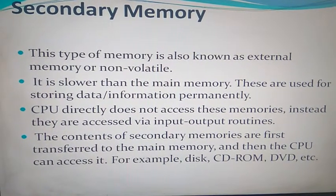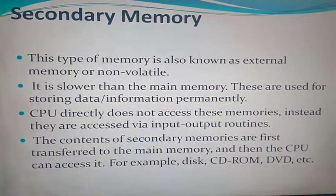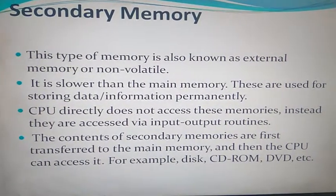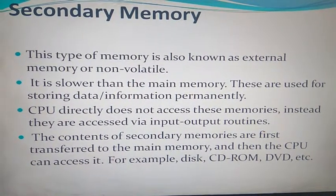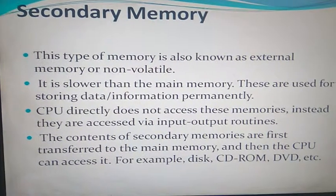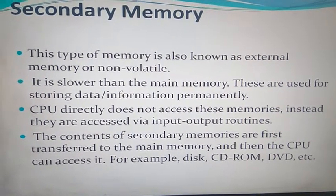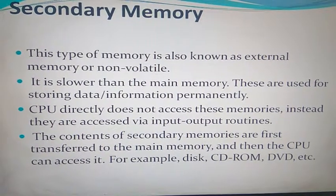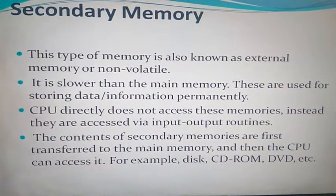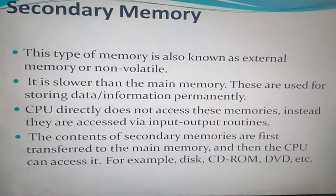Secondary memory is also called non-volatile memory — meaning once data is stored, it will never get erased. It is slower than main memory. These are used for storing data and information permanently. The CPU does not directly access secondary memory; instead, the contents of secondary memory are first transferred to the main memory, and then the CPU can access them. Examples include CD-ROM (Compact Disc Read-Only Memory) and DVD (Digital Versatile Disc).